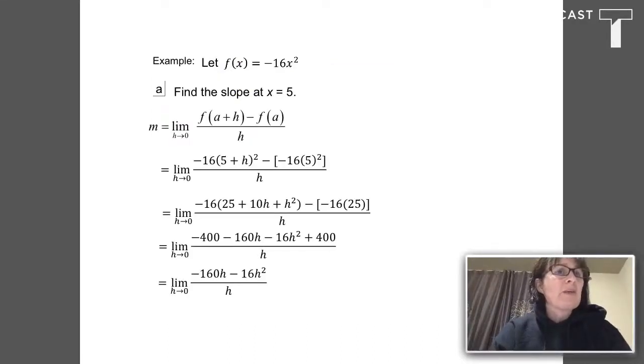Here's the example on page three. I've been asked to find the slope of the function F of X equals negative 16 X squared at the point where X equals 5. So I'm going to use my new definition, F of A plus H minus F of A all over H. And I've been told here that the X value I care about, that's my A, is going to be 5.